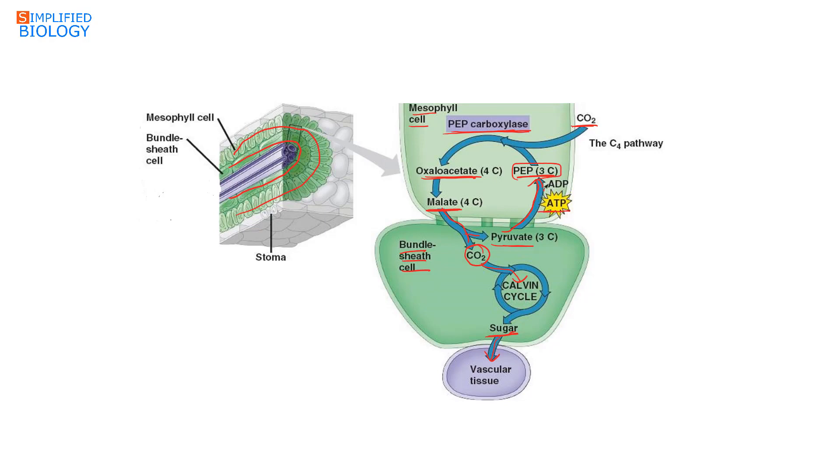During the C4 cycle, 12 plus 18, that is 30 ATP molecules are utilized: 12 during regeneration of phosphoenol pyruvate and 18 during the Calvin cycle.